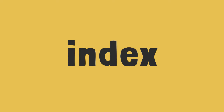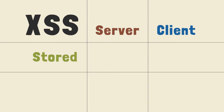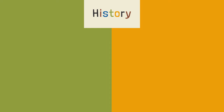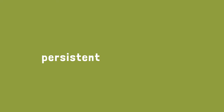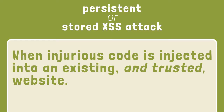A static webpage — say one that ends in HTML — can't be cross-site scripted. In order to understand today's terminology, it helps to understand the history. Before 2012, XSS was described as either persistent or non-persistent. A stored attack is when injurious code is injected into an existing and trusted website. It's called persistent or stored because the code then lives there and continues to execute for the life of the website — it will persist until it's discovered or eliminated.